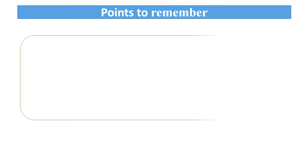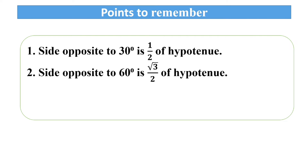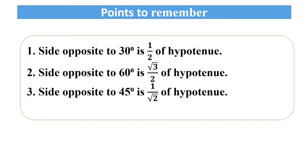Now, points to remember for this chapter: first of all, side opposite to 30 degree will be half of hypo; side opposite to 60 degree is root 3 upon 2 of hypo; and side opposite to 45 degree is 1 upon root 2 of hypo.